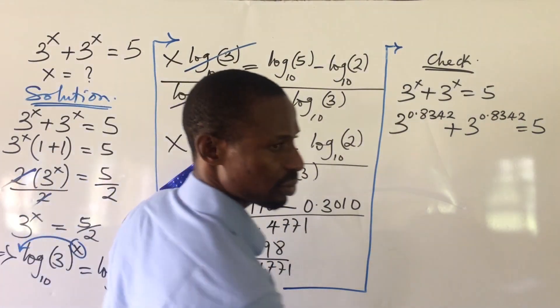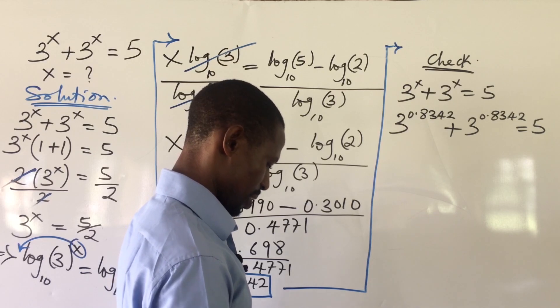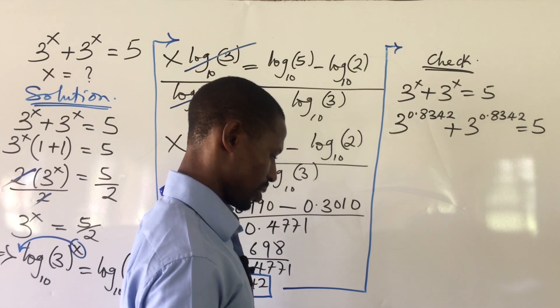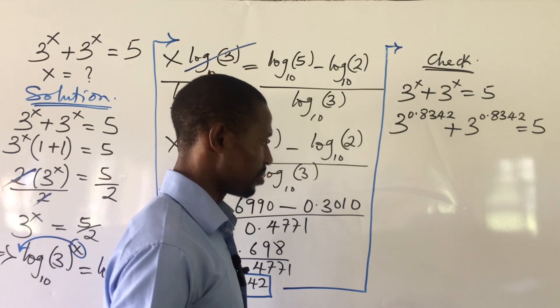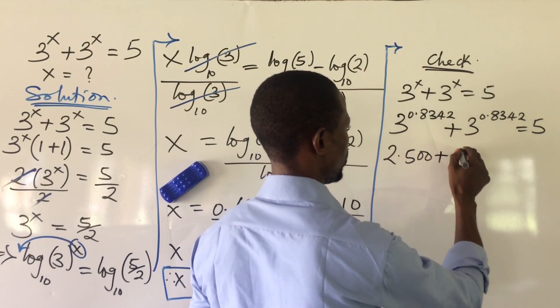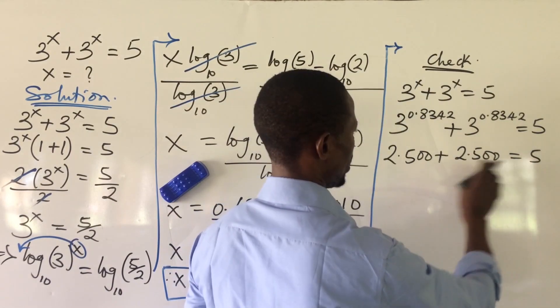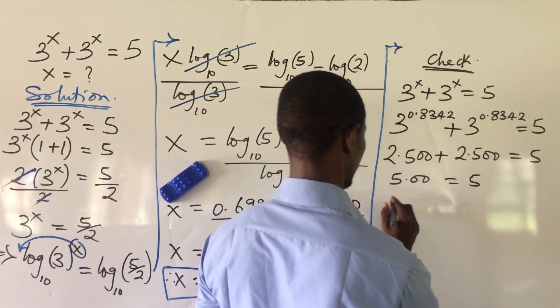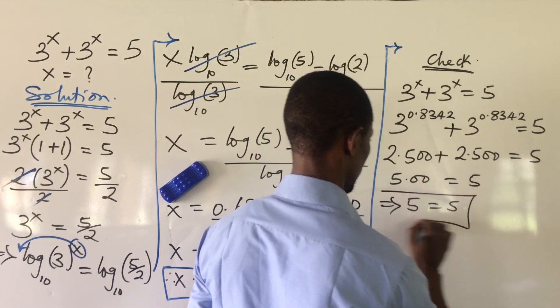Now, at this point, let's resort to our calculator. What is 3 to the power of 0.8342? Here we have 2.500. So here we have 2.500 plus this will give us 2.500. So if we add this together, automatically, this will give us 5.00, which is equal to 5. So this now implies that 5 is equal to 5. It's correct.